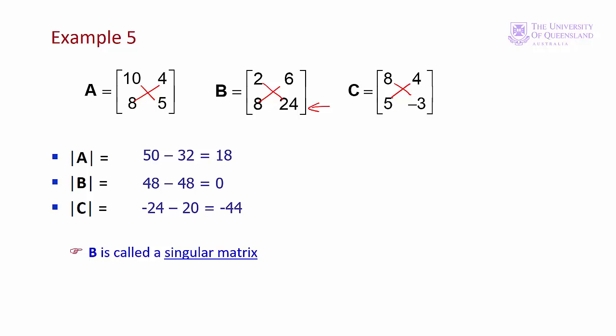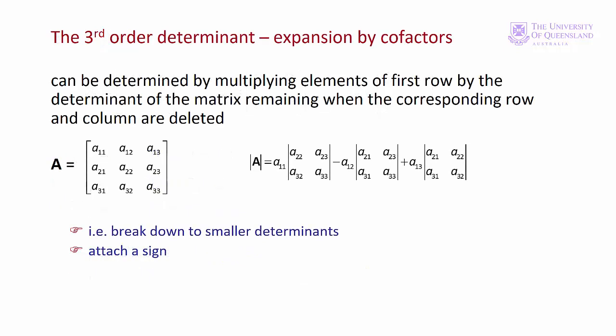Systems of two equations and two unknowns are pretty easy. What we really want to tackle is systems of three equations and three unknowns. So next we'll see how to calculate determinants of 3x3 matrices. We'll look at two mechanical methods first, then examine a more general approach that allows us to find determinants for not only 3x3 matrices but higher-dimension matrices. The first method is to expand along the first row.